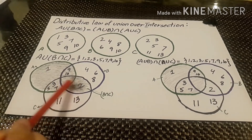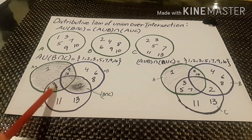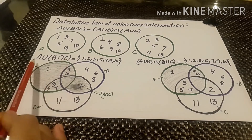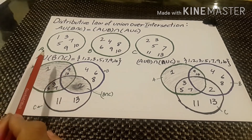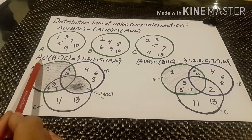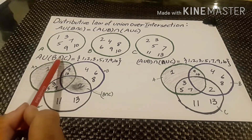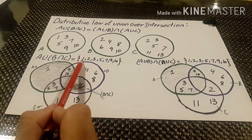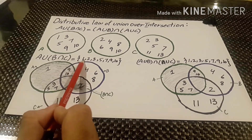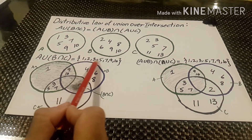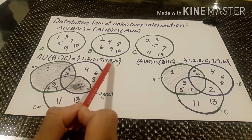By the tabulation method, A union (B intersection C) is calculated as the set having values 1, 2, 3, 5, 7, 9 and 10.